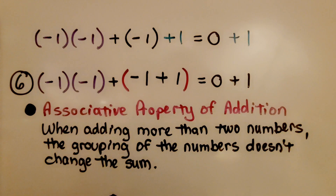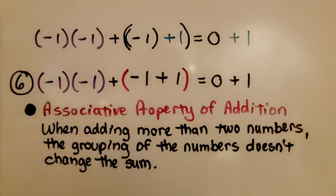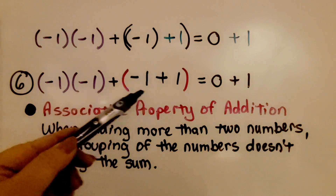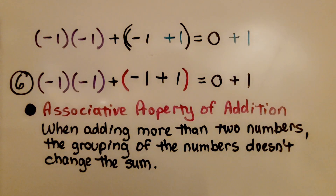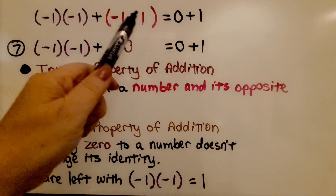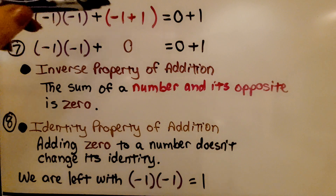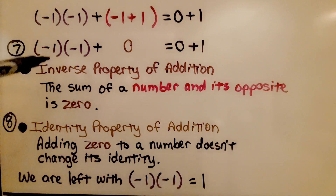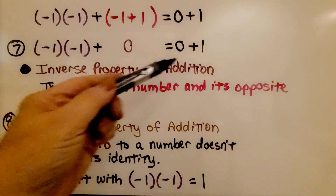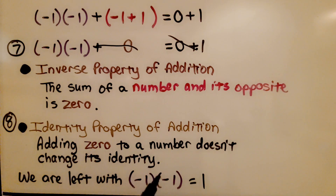We can use the associative property of addition to regroup, putting parentheses around the negative 1 and 1 together. When adding more than two numbers, the grouping doesn't change the sum. So now negative 1 plus 1 is inside parentheses. Using the inverse property of addition, negative 1 plus 1 equals 0 — they make a zero pair. And the identity property of addition says adding 0 to a number doesn't change its identity. So we could take that 0 away and be left with negative 1 times negative 1 is equal to 1.